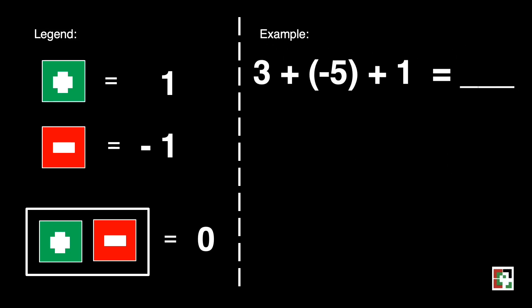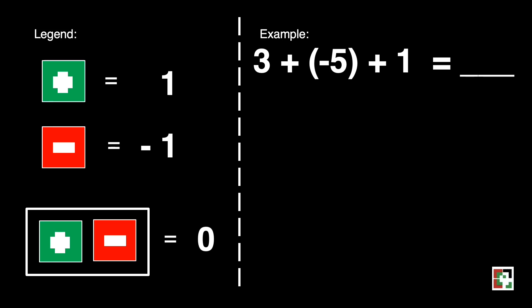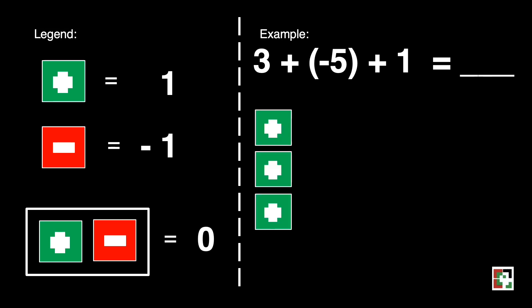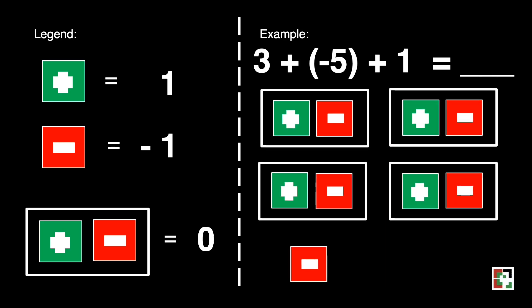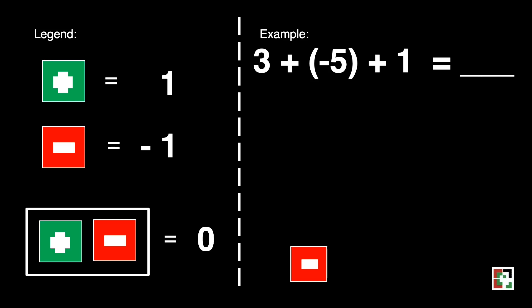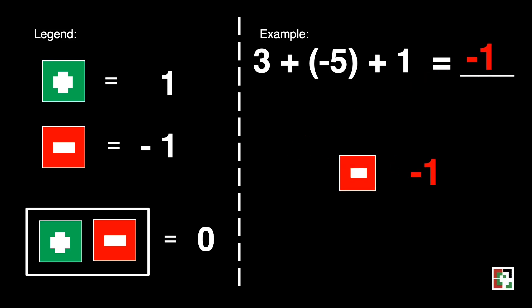We have another one: 3 plus negative 5 plus 1 is equal to blank. 3 is represented by 3 green squares, negative 5 is represented by 5 red squares, and 1 is represented by 1 green square. Let's find the 0 pairs. We have 1, 2, 3, and 4 zero pairs, which is equal to 0 or nothing. What is left is 1 red square, which is equal to negative 1. That's so simple, right?